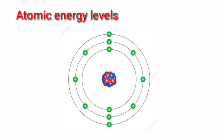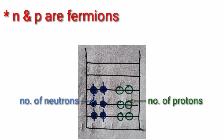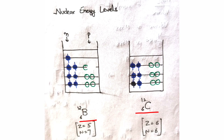Just as electrons in an atom occupy atomic energy levels, in the nucleus there are nuclear energy levels occupied by protons and neutrons. Since protons and neutrons are fermions, two neutrons and two protons can exist at one energy level. Taking the example of boron and carbon: in boron, there are 5 protons and 7 neutrons; in carbon there are 6 protons and 6 neutrons. In carbon, neutrons and protons occupy the same energy levels, making carbon more stable.